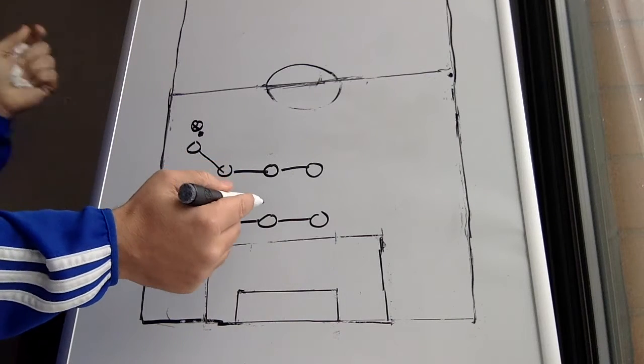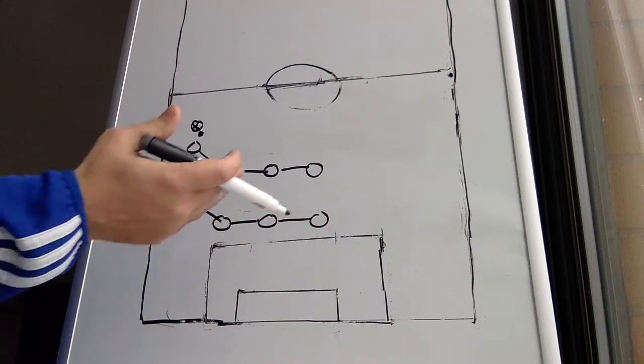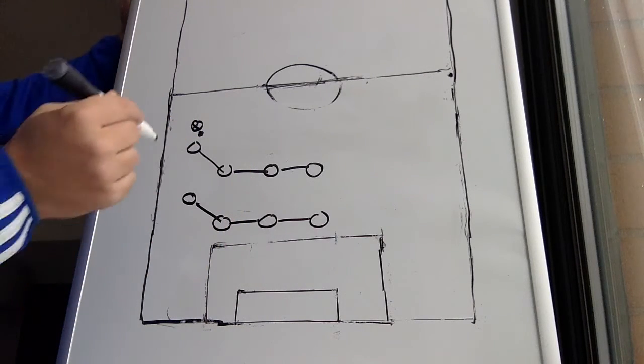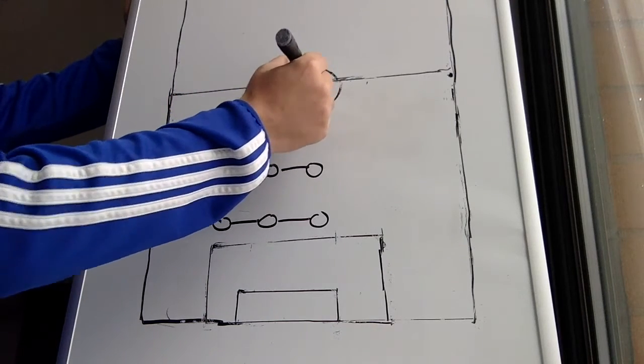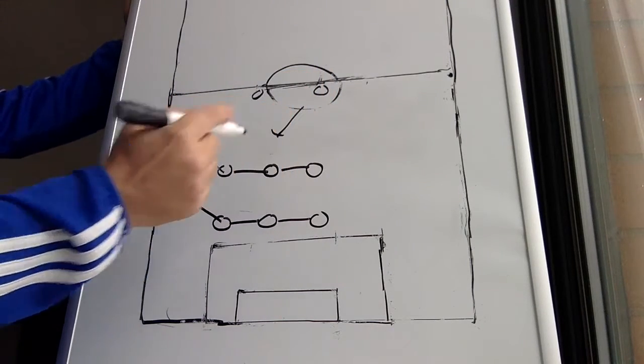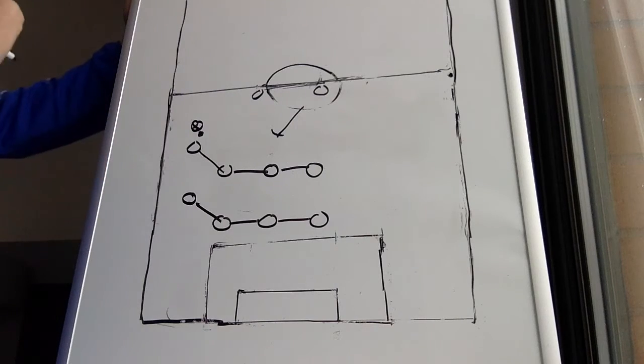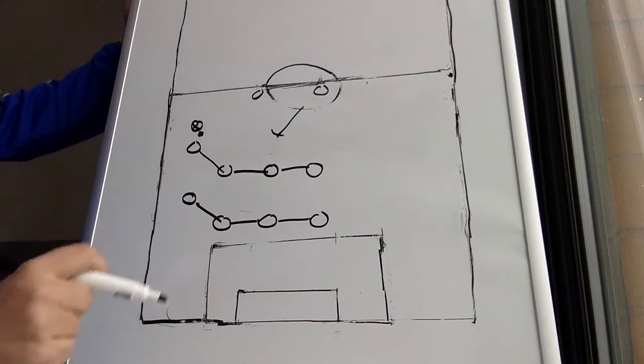I'm giving this example here with two lines of four, so this is a 4-4-2 type of example. The forwards might be pressed on the center back, you might have one drop in over here. It depends on your strategy, but let's just deal with these two lines of four right now.